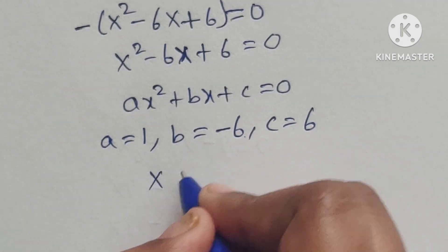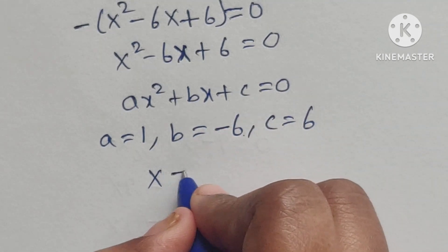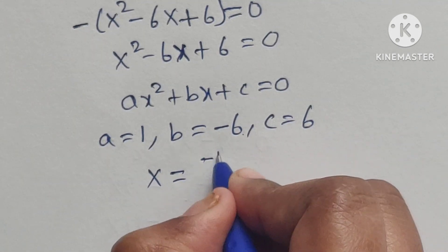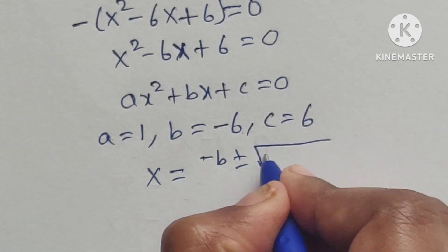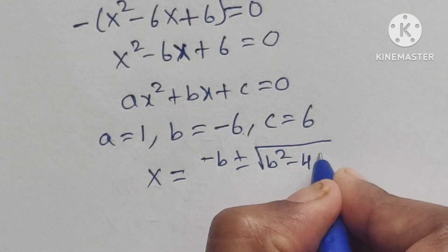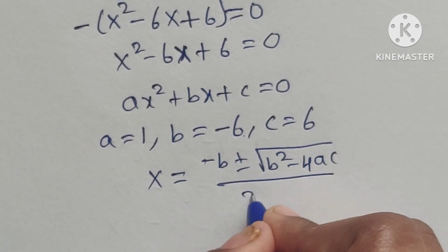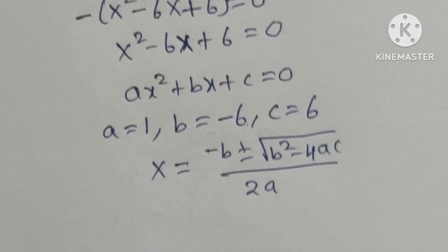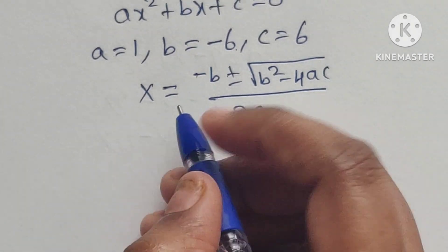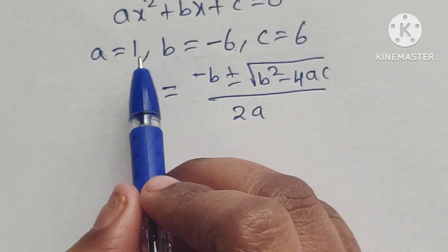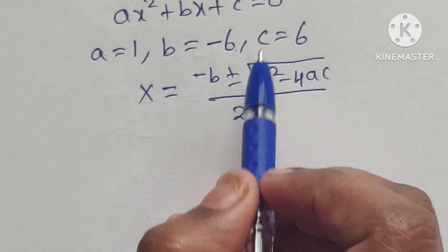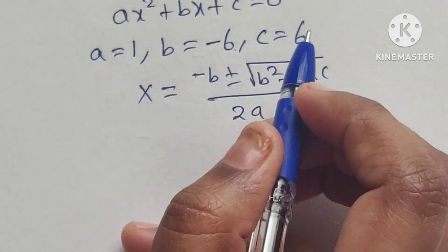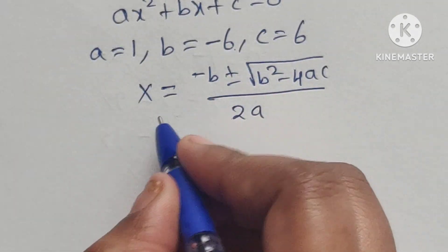Now we can apply the quadratic formula: x equals minus b plus or minus square root of b squared minus 4ac, divided by 2a. We have to substitute the values of a, b, and c into this formula.